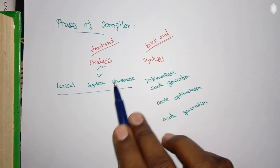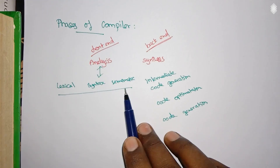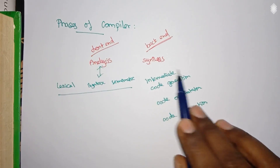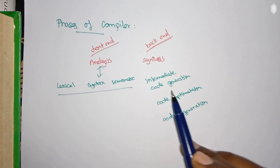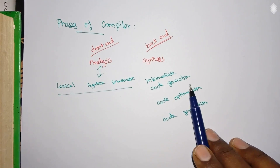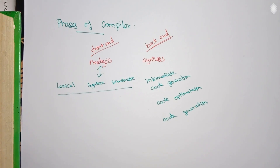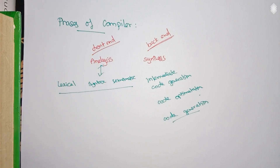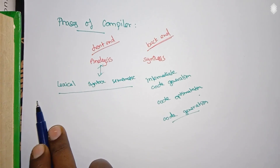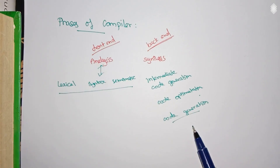In the synthesis phase we generate code out of the semantic analyzer's output. The intermediate code generator produces three-address codes from the parse tree. The generated code may have many temporary variables, so the code optimization phase optimizes the number of lines of code, and finally an assembly-level code is generated from the source code.